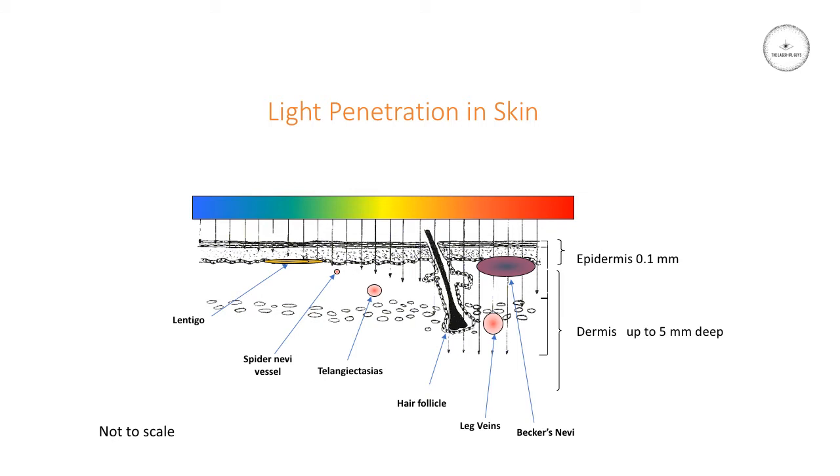If we consider that there are some targets in the skin that we might want to tackle with light energy, we can look at, for example, solar lentigos, which are very superficial. They're usually in the basal layer of the epidermal dermal junction.